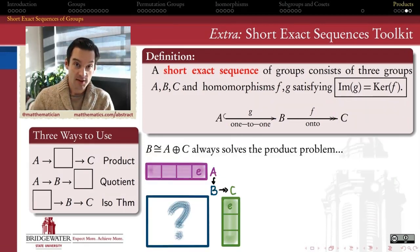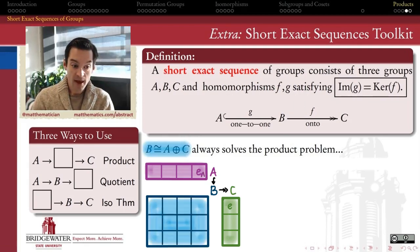We've previously seen the example of an external direct product of two groups. And what I'm going to claim is that the external direct product of A and C is always a solution to the product problem. There's always a short exact sequence of A into the direct product of A and C and then onto C. So, how would that work? How would I actually make that construction?